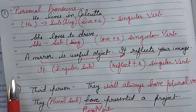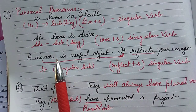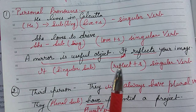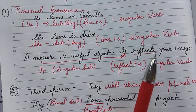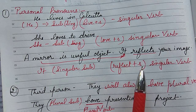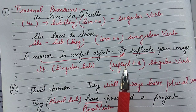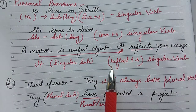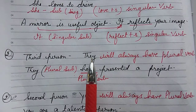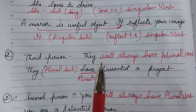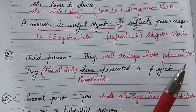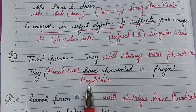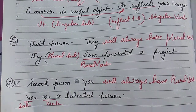For non-living objects, we replace them with 'it.' For example, 'A mirror is a useful object' — we replace mirror with it: 'It reflects.' Here, 'reflect + s' becomes the singular verb. So you can see how adding 's' to the root verb makes it singular. When the subject is in the third person plural — 'they' — you always use a plural verb. For example, 'They have presented a project.'